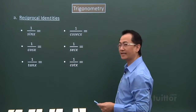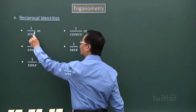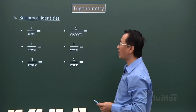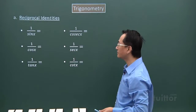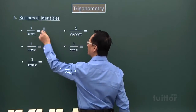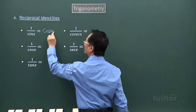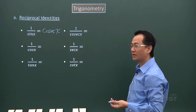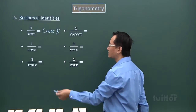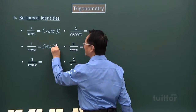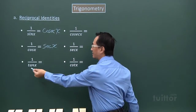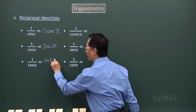All these identities have 1 over a trigonometric function — that's why we call them reciprocal identities. Where we have 1 over sin x, this identity will be cosecant x. Where we have 1 over cos x, the identity is secant x. And when we have 1 over tangent x, then we have cotangent x.